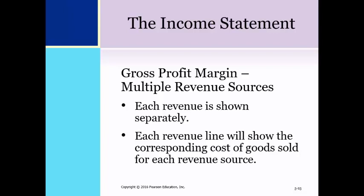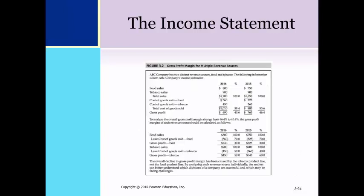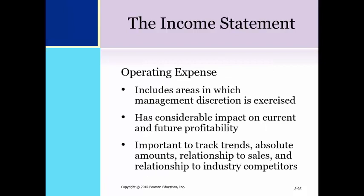Companies having more than one revenue source will show each revenue line separately and also show the corresponding cost of goods sold or cost of sales for each revenue source. This is an illustration of the calculation of different gross profit margins based on two distinct revenue sources: food and tobacco sales. Analysis of the information shows that the overall decline in the gross profit margin from 2015 to 2016 was attributable to the decline in gross profit for tobacco sales. By analyzing each revenue source individually, the analyst can better understand which divisions of a company are successful and which may be facing challenges.